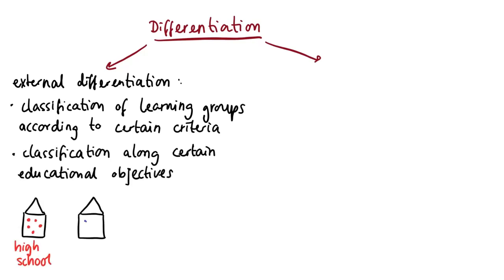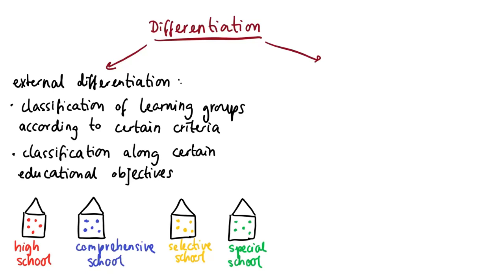Another form of external differentiation is the allocation to the following schools: high school, comprehensive school, selective school and special school. However, it's precisely this differentiation that has turned out to be unfavorable for a variety of reasons. Therefore, teaching learning processes currently follow the principles of internal differentiation.